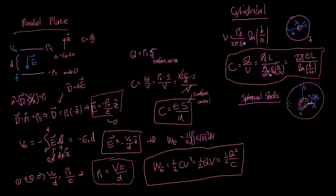To figure out the potential for the spherical shell, we work through the equations. The electric field is one over four pi epsilon, treating it as a point charge of total charge Q, giving E equals Q over r squared in the r-hat direction — using the basic electric field definition in spherical coordinates.